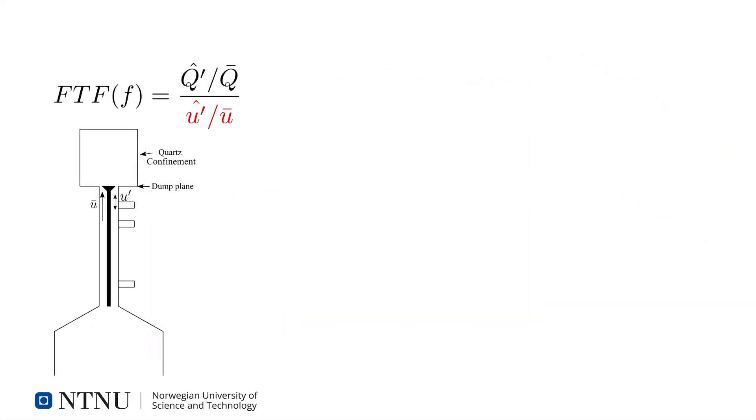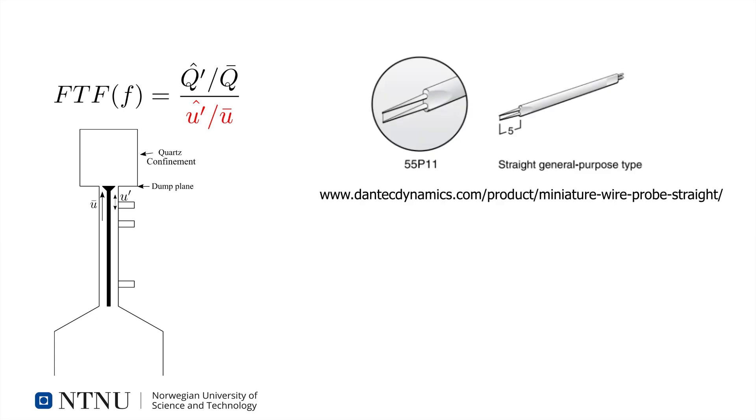We'll look at measuring the velocity first. One of the cheapest ways to accurately measure the fluid velocity is to use a hot wire, such as the Dantec Dynamics 55P11 shown on the screen. However, there are some practical challenges and a fundamental drawback with this method.